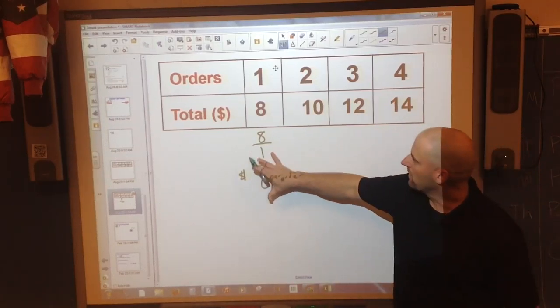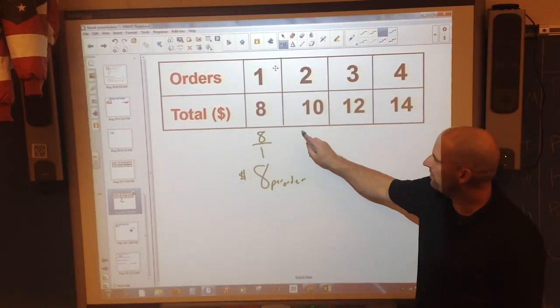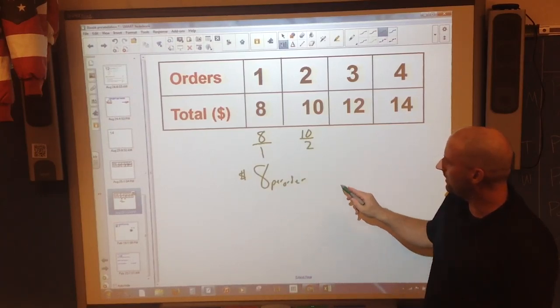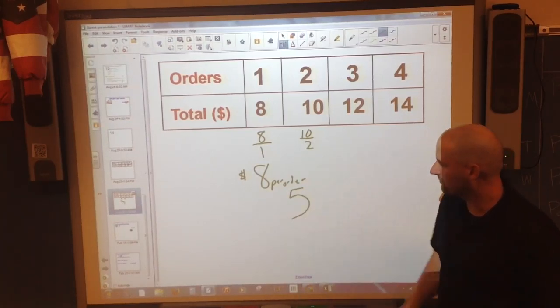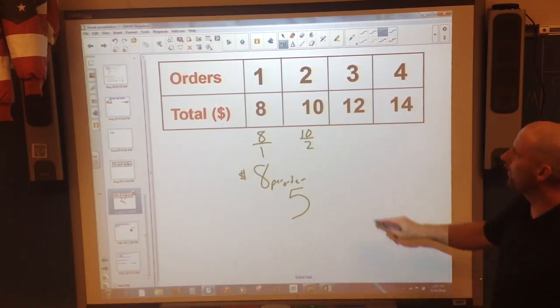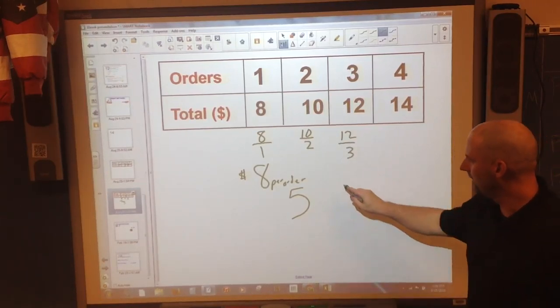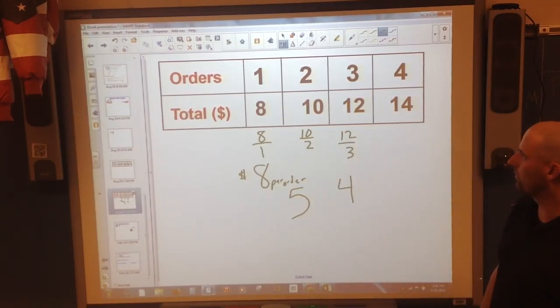I'm going to skip the labeling part. We're just going to find that for everything else. I would put 10 over 2, and that would end up being $5 per order. I'd put 12 over 3, and you end up having $4 per order.